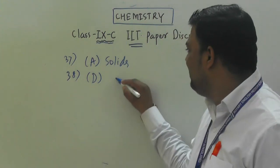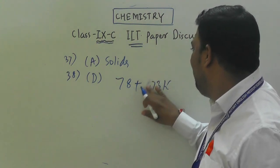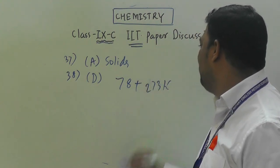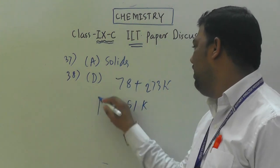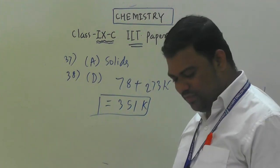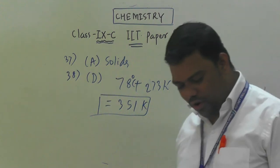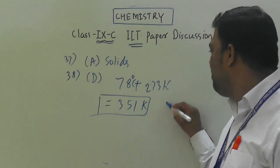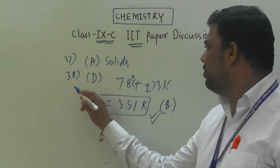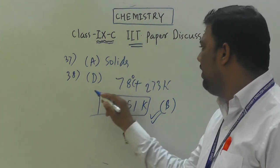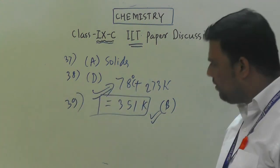Question number 39: the boiling point of alcohol is 78°C. To convert to Kelvin: 78 + 273 = 351 K. So option B is correct.